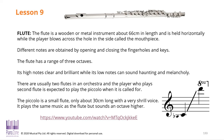Looking at the flute: its lowest note is middle C and it goes up three octaves. Different notes are obtained by closing and opening the finger holes across the top. The sound it makes is high and brilliant, and can be quite haunting. There are usually two flutes in an orchestra — they sit in pairs. The person on the right is called the first flute and the person on the left is the second flute. They can only play one note at a time, so if a part has two notes, the person on the right plays the high note and the person on the left plays the low note.